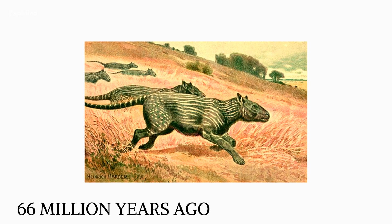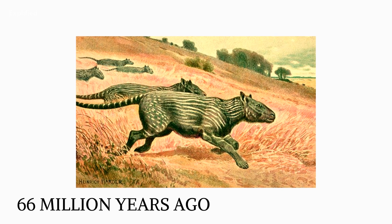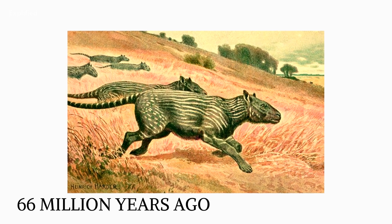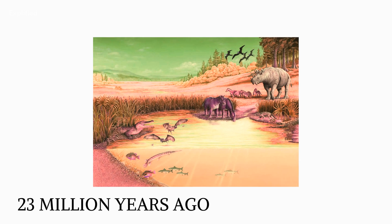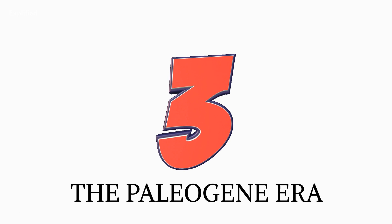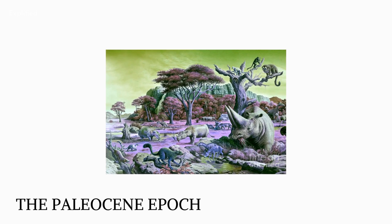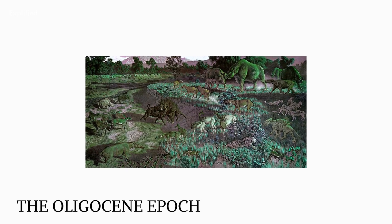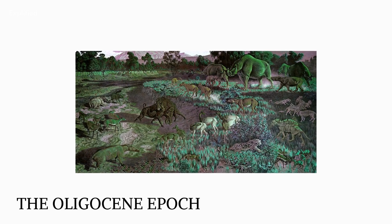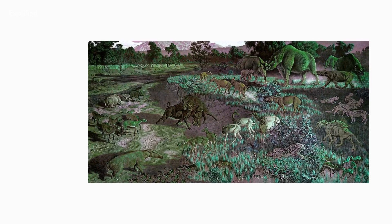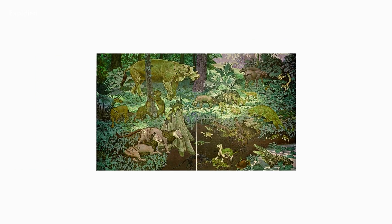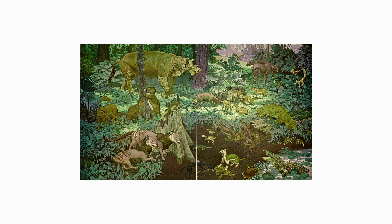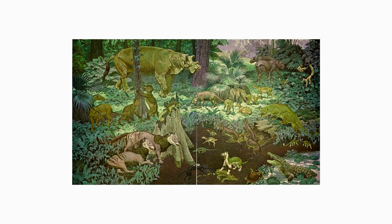The Eocene era began around 56 million years ago and ended almost 23 million years ago, and is one of the three major divisions of the Paleogene era — the other two being the Paleocene epoch, the preceding one, and the Oligocene epoch, the last phase of this age. Even within the Eocene era there are further divisions.